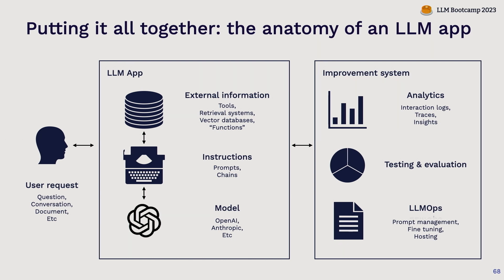When a user interacts with a system like an LLM-powered application, behind the scenes, that application usually consists of a few pieces. There's the underlying model — like you might expect from OpenAI or Anthropic or wherever you purchase your models today. Then there's the instructions, which is the prompts, all the prompt engineering magic that goes into that. Or the chains — the more logical sequence of prompts that you can use to tell the model what to do.